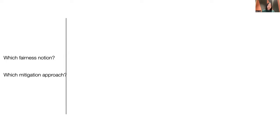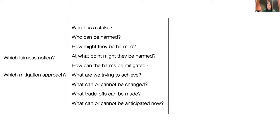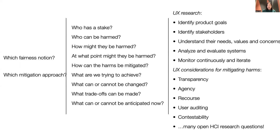I want to end this part of the presentation by highlighting why fairness is an HCI researcher's and UX practitioner's job. Even if we just focus on the two points — that there are many different fairness notions and mitigation approaches — the question is how to choose. The answer can never be automated, but requires a deep understanding of the specific system: who are the stakeholders, who can be harmed and how, what does an acceptable outcome look like, what trade-offs can be made, and what can or cannot be anticipated at the moment. Many of these questions are core to what UX research cares about, through formative research, evaluative research, and continuous monitoring and iteration.